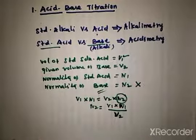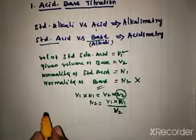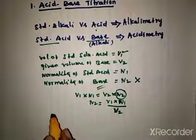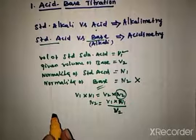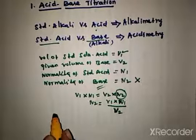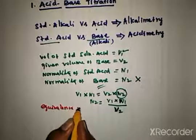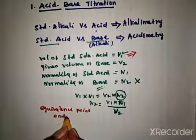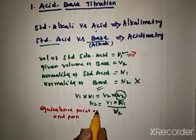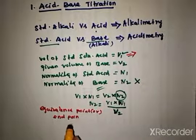Like this, by neutralization we can find the normality of the unknown solution. The volume of the standard acid required to exactly neutralize a given volume of the base is found by the end point, also called the equivalence point or stoichiometric point.